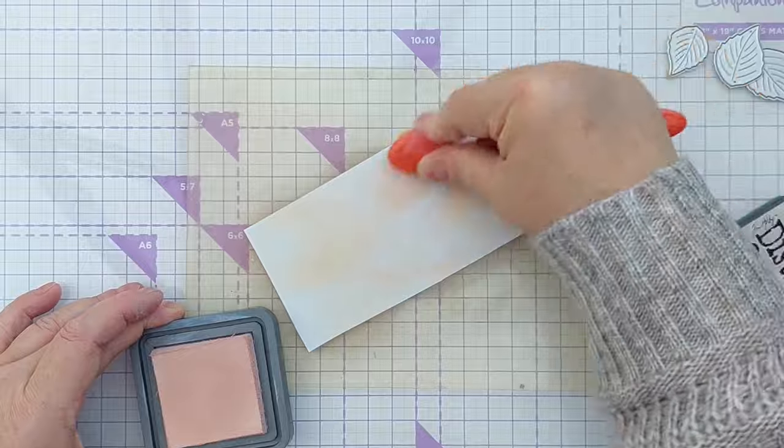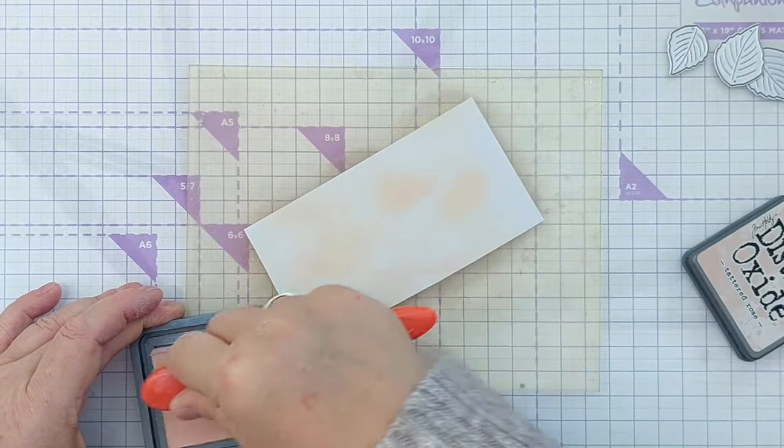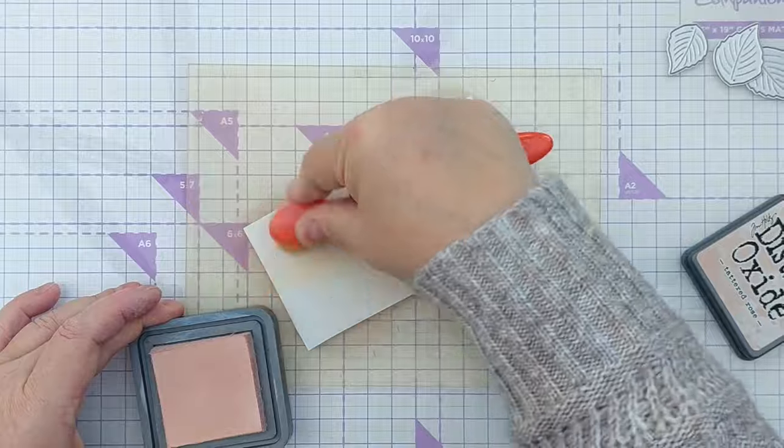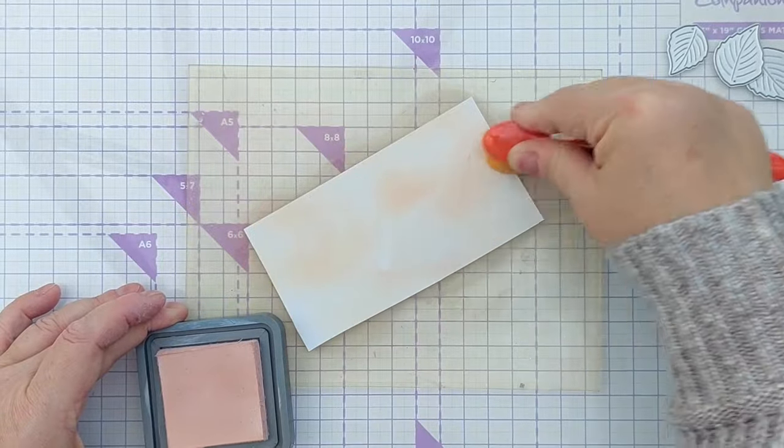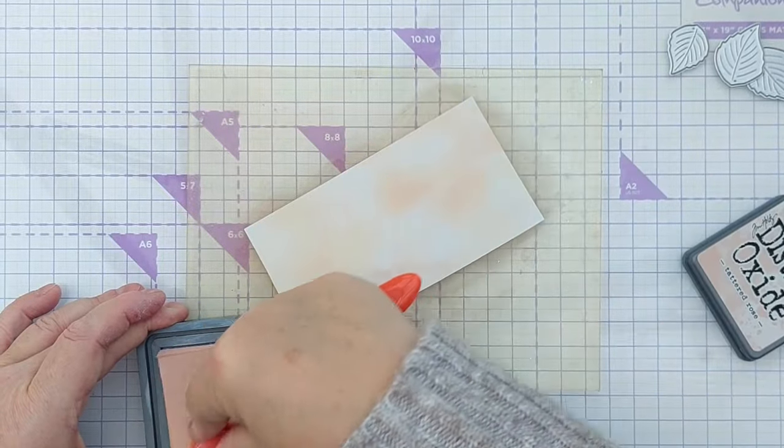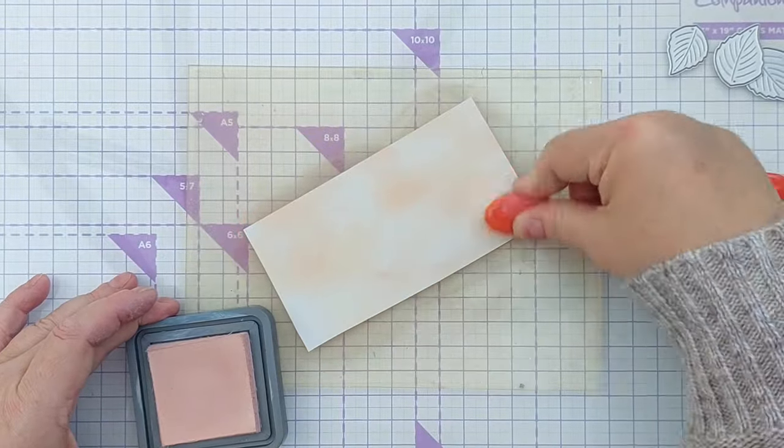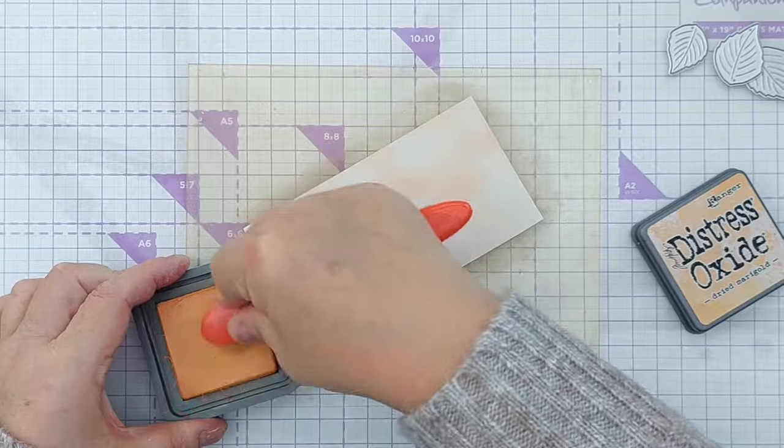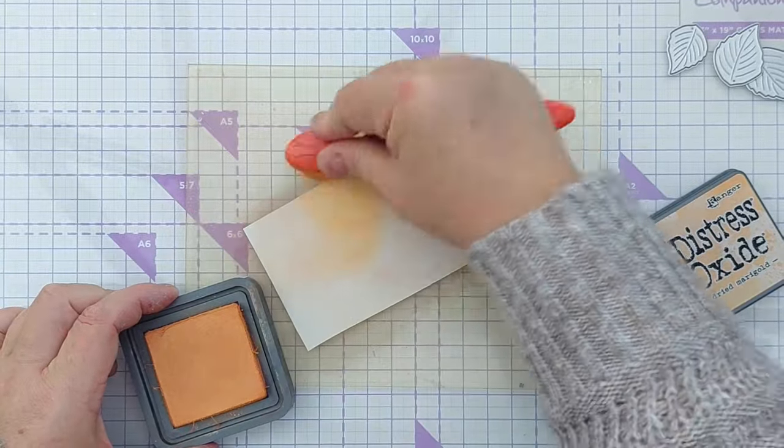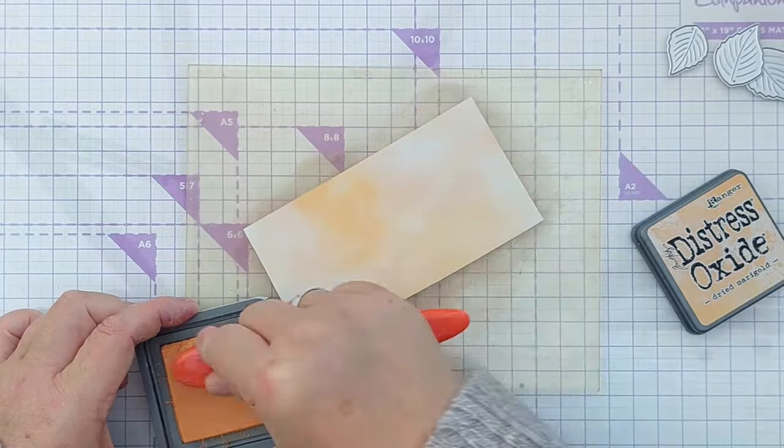So I started by creating my leaves. I took a piece of smooth white card and blended on some tattered rose distress oxide. I didn't go for a perfect blend. I went for something quite patchy and variegated like a leaf, and then over the top of that I put on some dried marigold distress oxide, again in a patchy way.